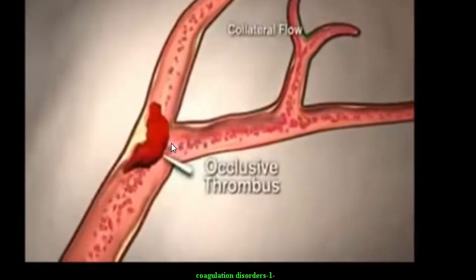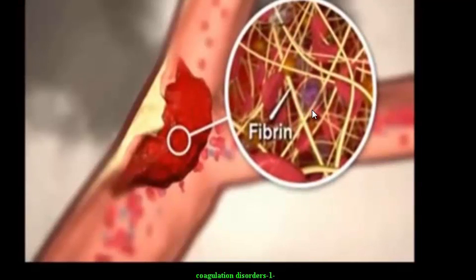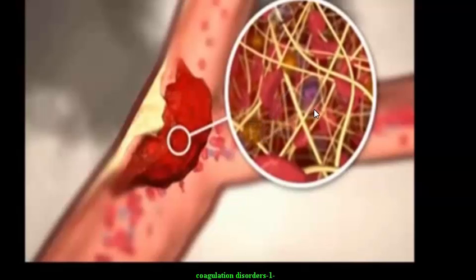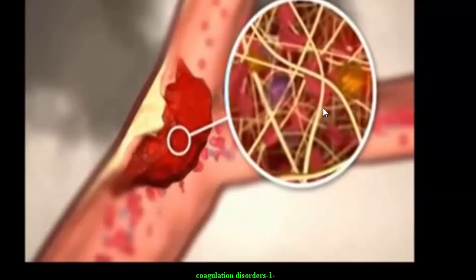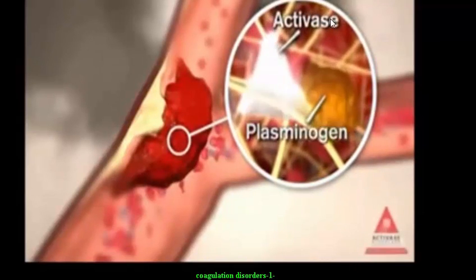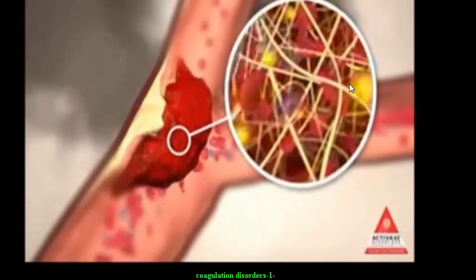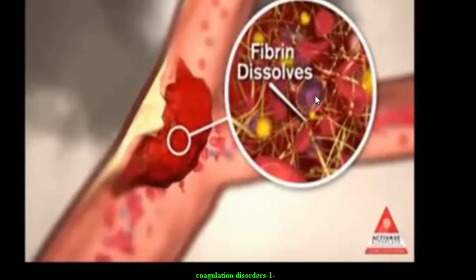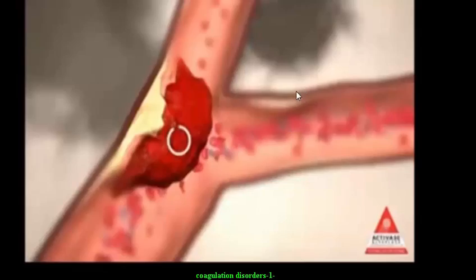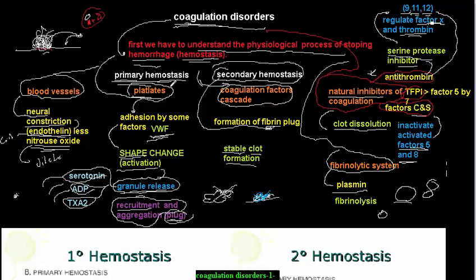Here is an occlusive thrombus. The fibrin should be lysed by plasmin. Plasmin must first be converted from plasminogen by the plasminogen activator. The plasmin then plays a role in fibrin dissolution, and we have a dissolved clot. This was the physiology of coagulation.